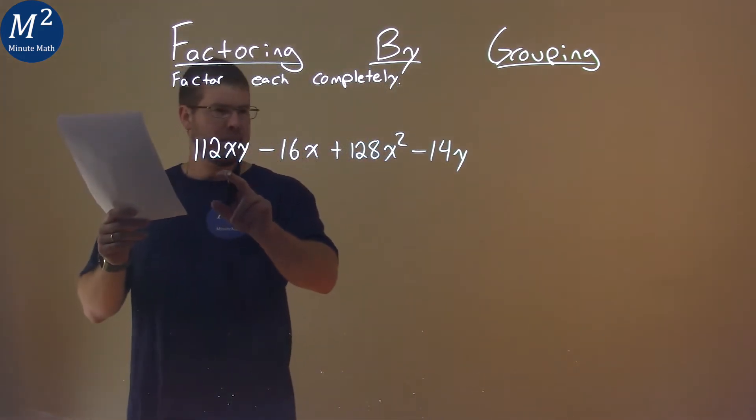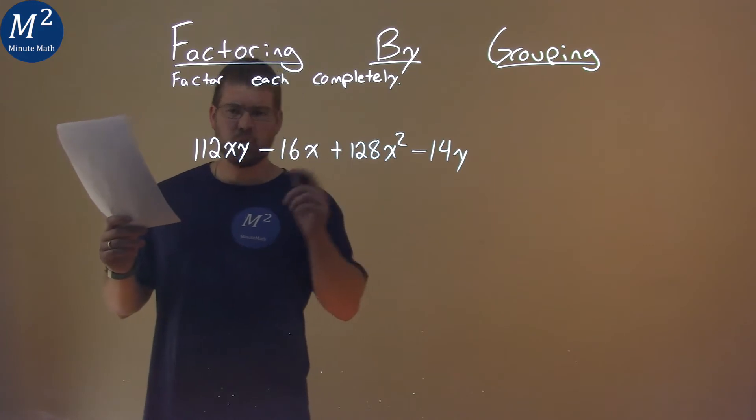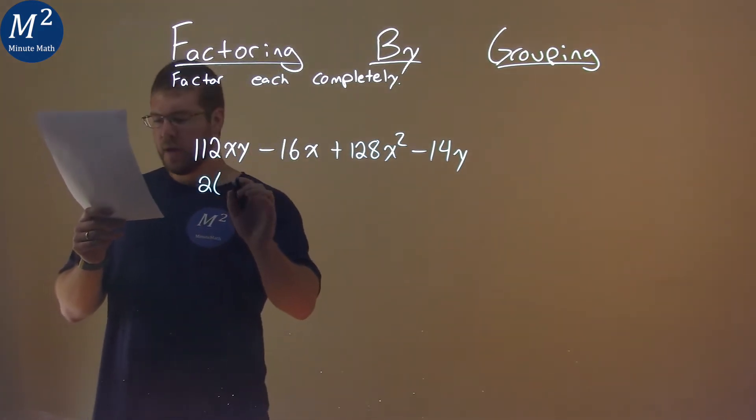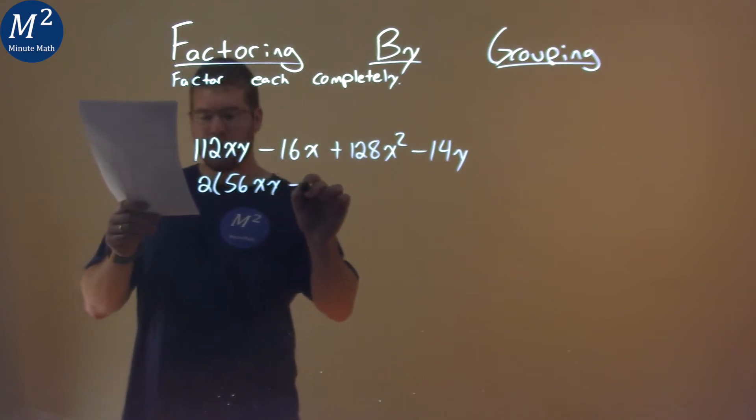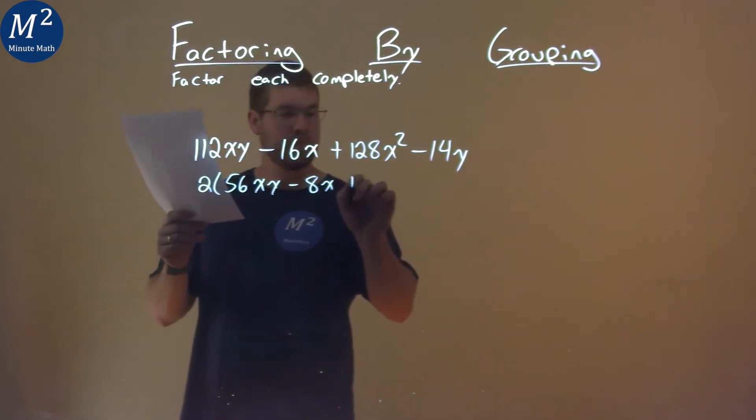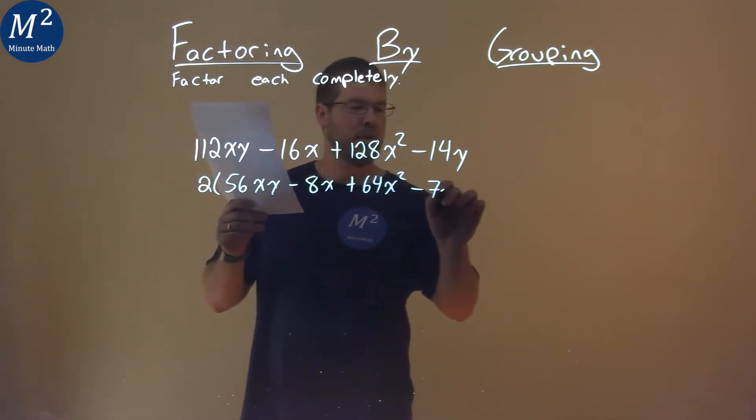Well, first thing I notice, a 2 goes into each part here, so let's pull that out. 2 comes out, and we're left with 56xy minus 8x plus 64x squared minus 7y.